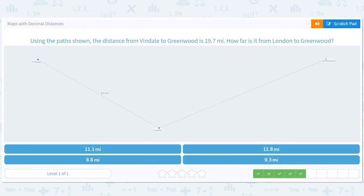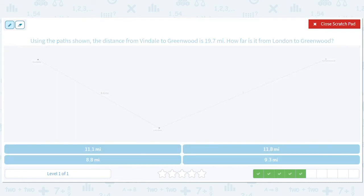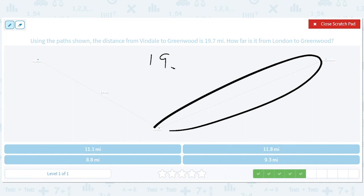Using the path shown, the distance from Vindale to Greenwood is 19.7 miles. How far is it from London to Greenwood? Again, they want this. They've given you the whole thing is 19.7. They've given you one piece is 8.6. You subtract them. You're going to get 11.1.